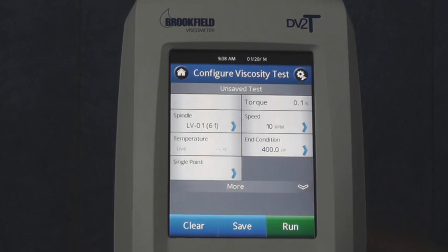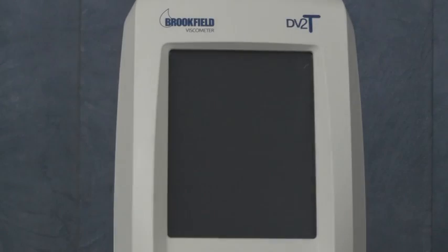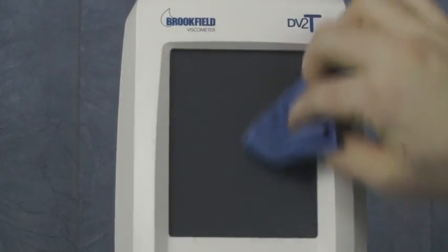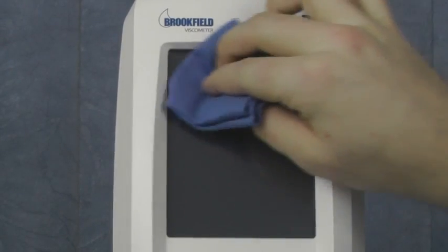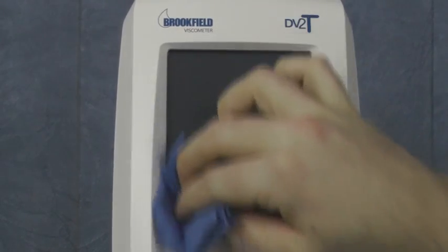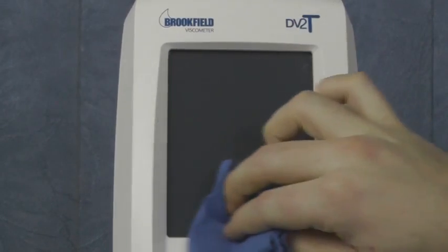You must first power off the viscometer. You then want to clean the viscometer's touch screen with the provided cloth. Any dust, debris or oil on the touch screen may prevent proper adhesion of the screen protector.